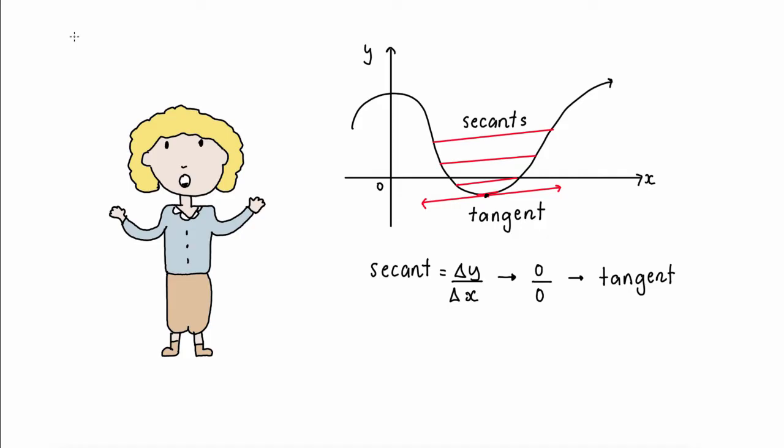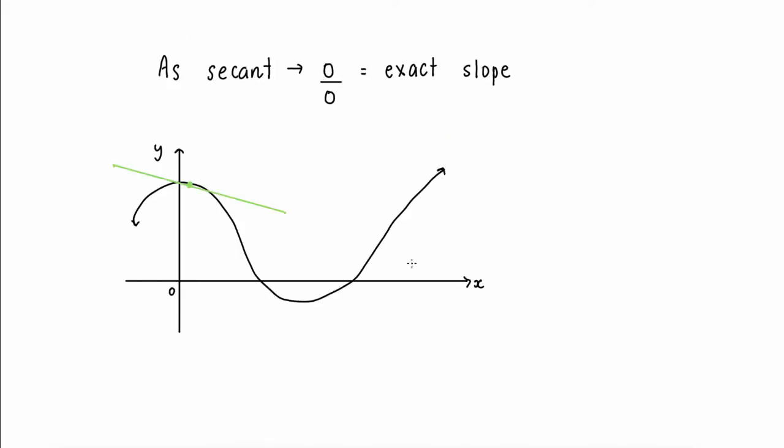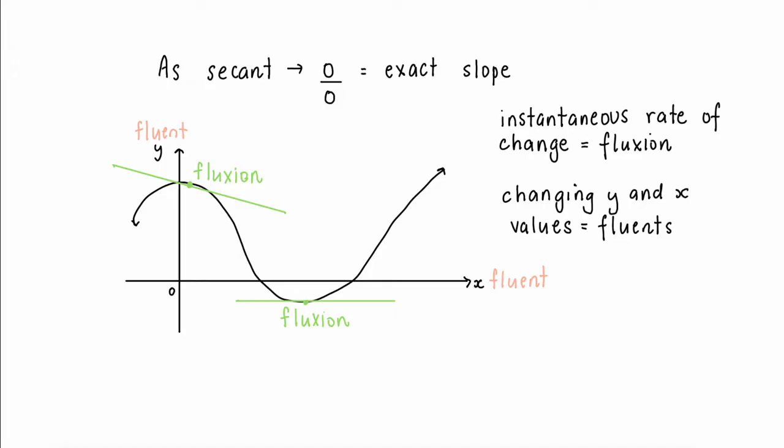This is when Newton calculated something called the derivative or gradient function, which can accurately give the slope at any point on any function. Newton called this process of calculating the instantaneous rate of change the fluxion, and the changing x and y values fluents, which is the differential calculus we use today.